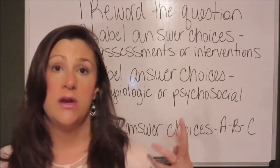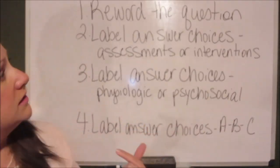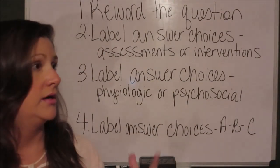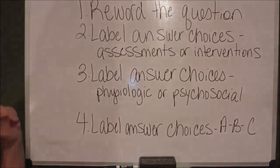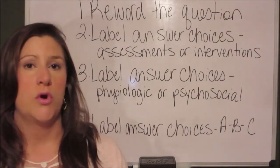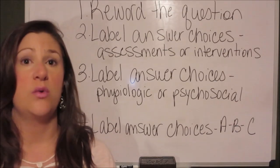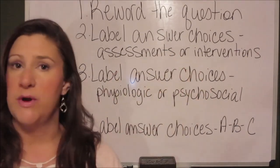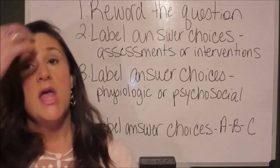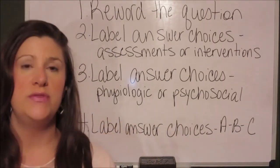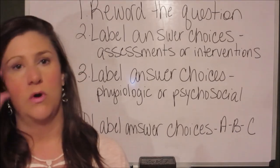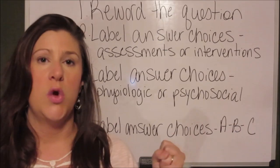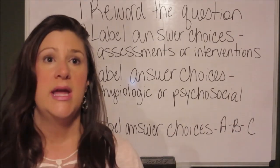I want to talk about my version of the decision tree. The first step when looking at a nursing question — even when you've narrowed it down between A and C — is Step 1: look at the question stem. Reword the question. If you don't understand what the question is asking, you might as well just be guessing, because you're not going to arrive at the correct answer. Put the question stem into your own words. If it's a priority action question, say to yourself: